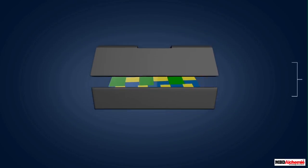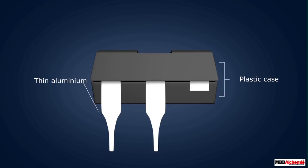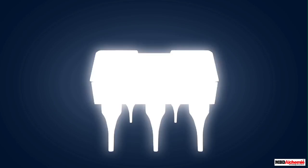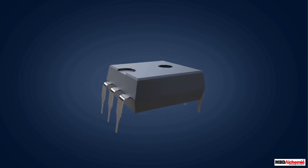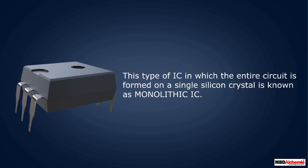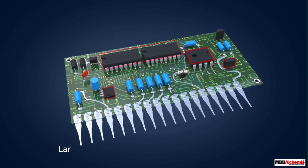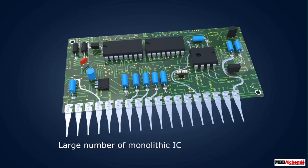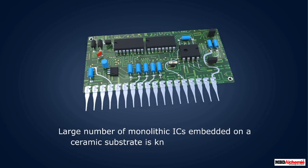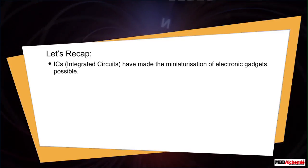The internal connection between the components is made by passing aluminium vapor. The chip is enclosed in a protective plastic case. Finally, with the help of thin aluminium leads, the connectors are taken out — and this is how the standard package IC is manufactured. This type of IC, in which the entire circuit is formed on a single silicon crystal, is called a monolithic IC. These are the most widely used ICs.